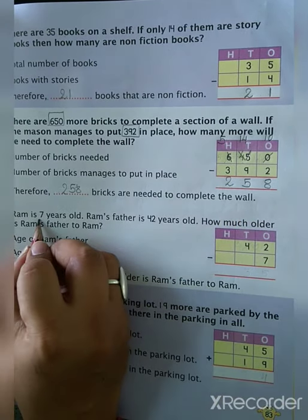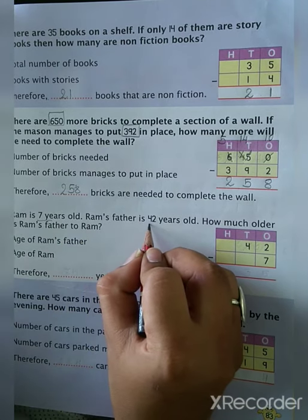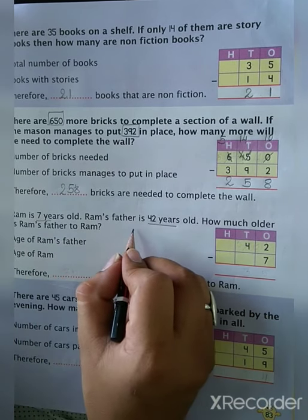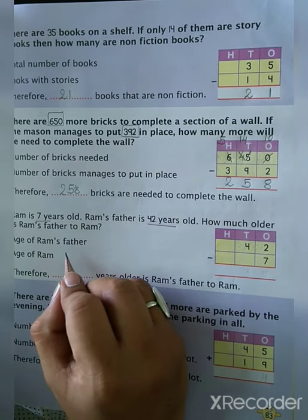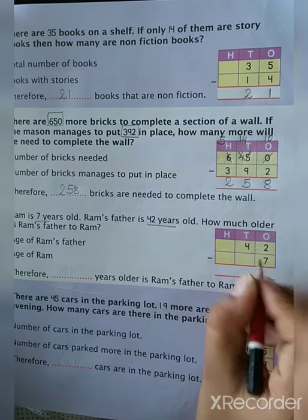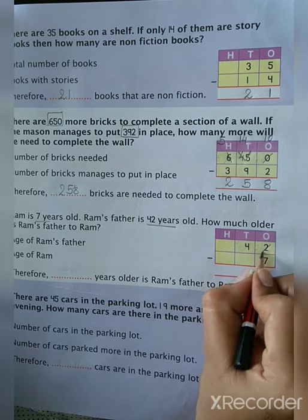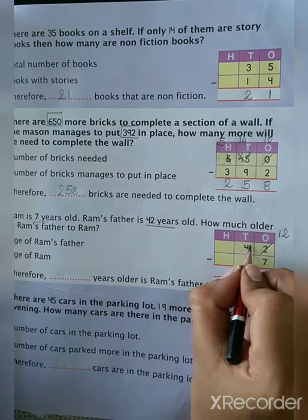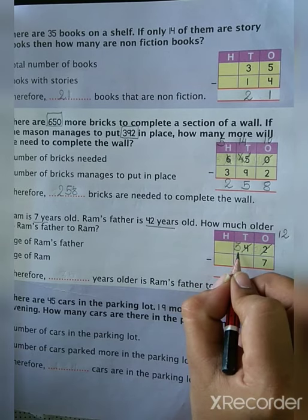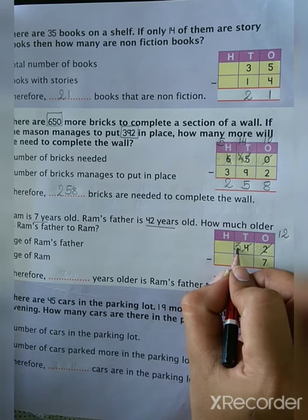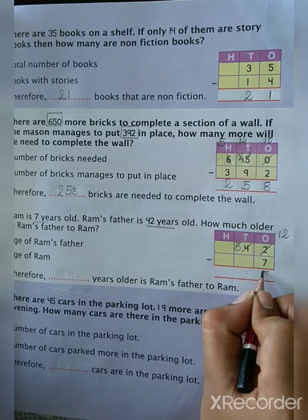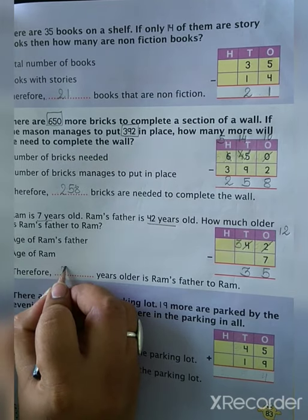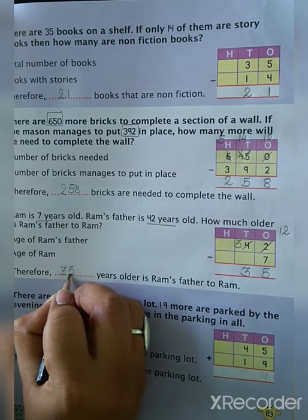Now Ram is 7 years old and Ram's father is 42 years old. How much older is Ram's father than Ram? So 42 minus 7: 2 minus 7 is not possible, take a borrow — 10 plus 2 is 12. Cut 1 from next position: 4 minus 1 is 3. 12 minus 7 is equal to 5. So Ram's father is 35 years older than Ram.